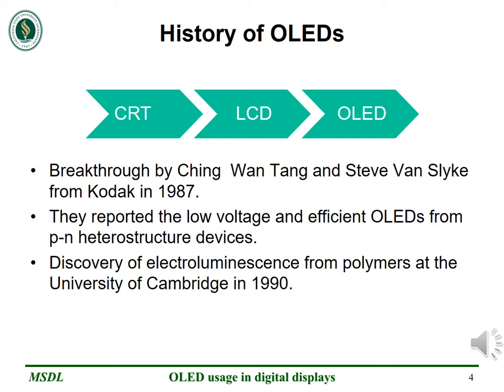A huge breakthrough was made by Ching Van Tang and Steve Van Slyke from Kodak in 1987. They reported the low voltage and efficient organic LEDs from PN heterostructure devices. Little did they know what a profound impact their breakthrough discovery proved to be in the field of digital displays. After 30 years of intensive material and device development and heavy investment in advanced manufacturing technologies, organic light emitting diodes have grown rapidly, enabling most forms of digital displays such as foldable smartphones and rollable TVs.